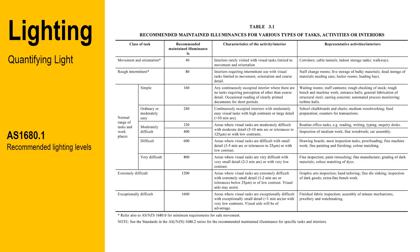The measure of light is important as it establishes benchmarks for lighting performance in work and public environments to ensure that there is a safe level of light to perform tasks without causing long-term damage to health. The Australian Standard AS 1680.1 defines the amount of light required in different scenarios.